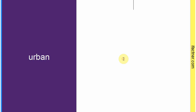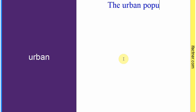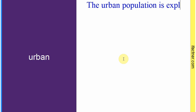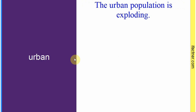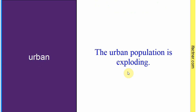Word hai: 'urban'. Sentence banaate hain: 'The urban population is exploding.' Jo shehron ki aabadi hai woh bahot tezi se barh rahi hai. Toh 'urban' hota hai 'shahri' — shehar se related. Sentence banaaya: 'The urban population is exploding.'